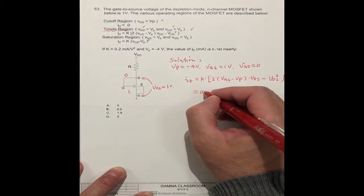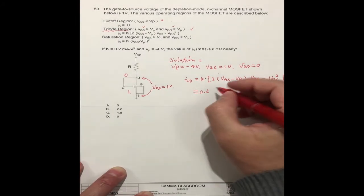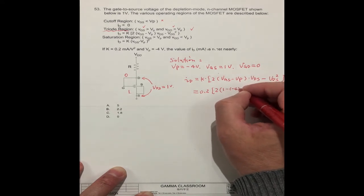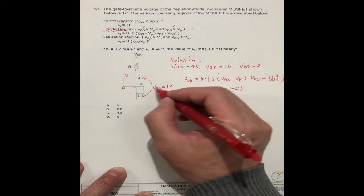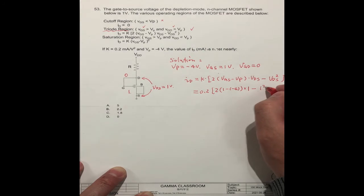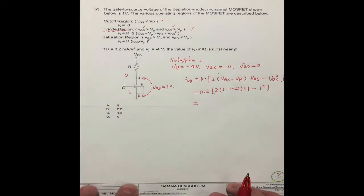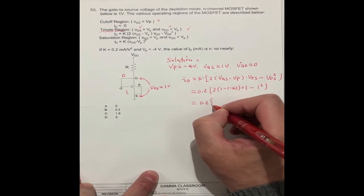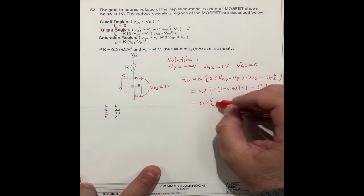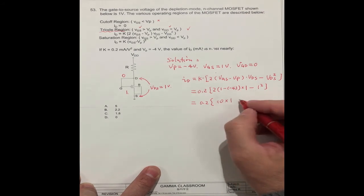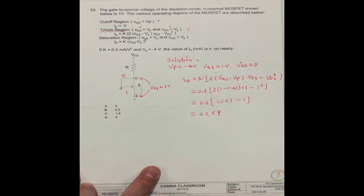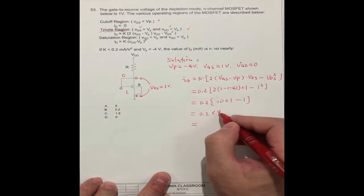What is the number of K? K is 0.2, times 2, VGS is 1, VP is minus 4, that's minus 4. And VDS, VDS is the same, times VDS minus VDS squared, VDS is 1 squared. So we can get the calculation here. 0.2 times, this 1 minus minus 4 is 5, 2 times 5 is 10, it's 10 times 1 minus 1, equals 0.2 times 9, this is 9, so it's equal to 1.8.